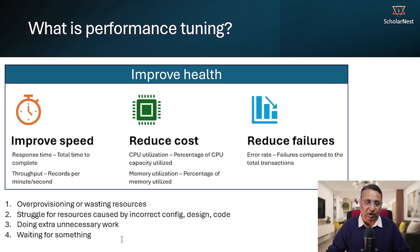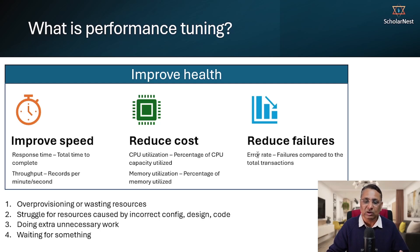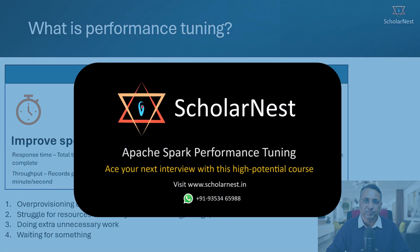These are some health-related problems — there are many others, and we will learn about various health-related problems throughout the course. The point is, you improve the health of your application, your job, or a particular query, and then you can attack all three goals at once. You can improve the speed, reduce the cost, and also make sure you are not getting resource failure-related problems like out-of-memory exceptions. That should be the approach for your performance study. Thank you.